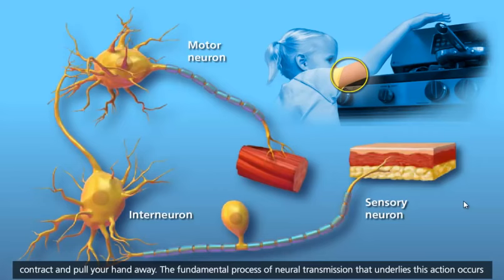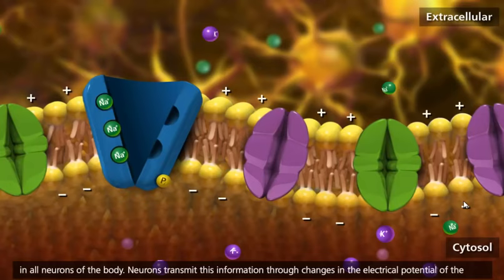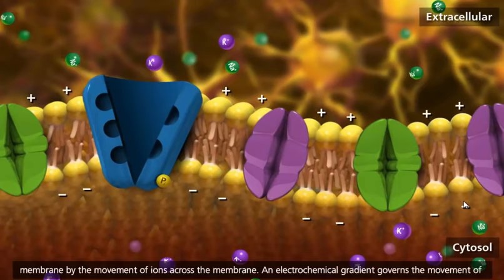The fundamental process of neural transmission that underlies this action occurs in all neurons of the body. Neurons transmit this information through changes in the electrical potential of the membrane by the movement of ions across the membrane.